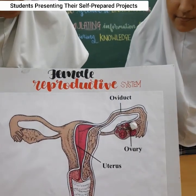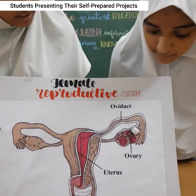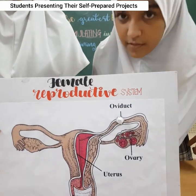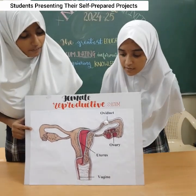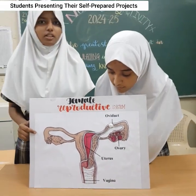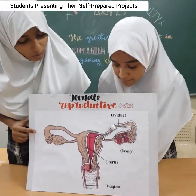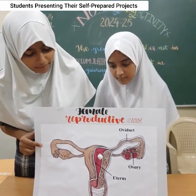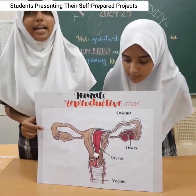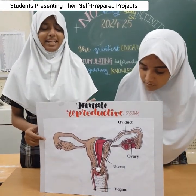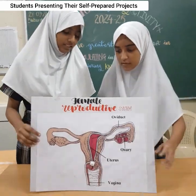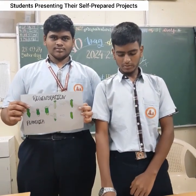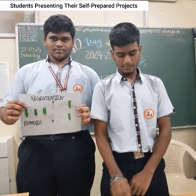When the ovum is released from the ovary, it travels to the Fallopian tube and remains there for 24 hours. When there is no fertilization, the ovum will travel to the uterus and will be released through the vagina when the menstrual cycle occurs.